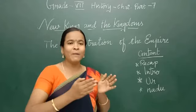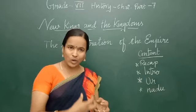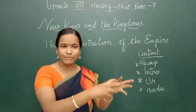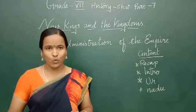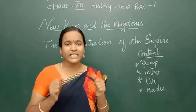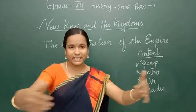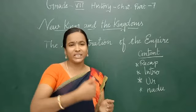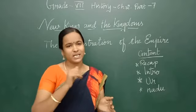Vijayalaya was a chiefly family who captured the Kaveri delta region and built the city of Tanjavur. He built a temple for the Goddess Nishumbhasudini. He started extending the territory of his Chola dynasty. We also studied about Raja Raja Cholan and his achievements, followed by Rajendra Cholan, who is the son of Raja Raja Cholan.